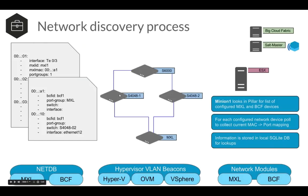We know which MXL to talk to because of the information we learned about the network — we know that the Hyper-V MAC address is on this MXL. We go into the MXL and add VLAN 31 to the port groups and individual interface. In this case, this Hyper-V server is plugged into interface 3 on the MXL. At that point, you have full communication for VLAN 31 — every layer of the network is updated.